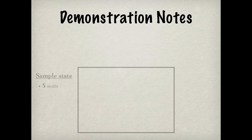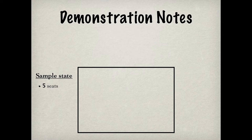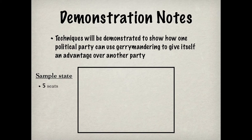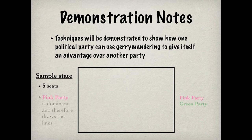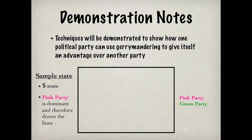To demonstrate each technique, I'll use a map of a sample state that receives five seats in the House of Representatives. I'll demonstrate how Gerrymandering can be done by a state legislature that is controlled by one political party seeking to give itself an advantage over another party. In this sample state, the fictitious Pink Party is the dominant political party, so it gets to draw the lines for the electoral districts.